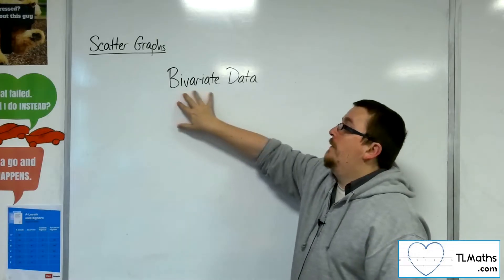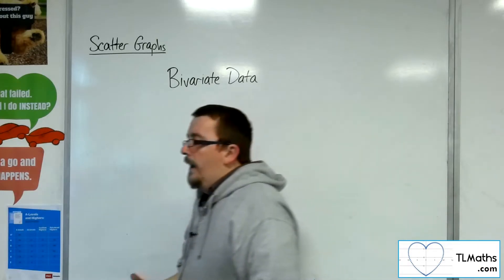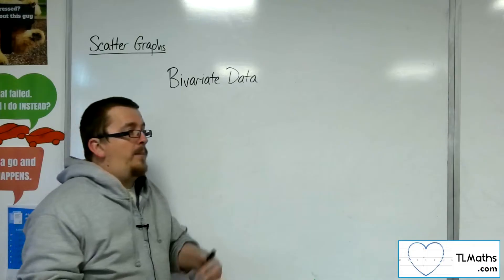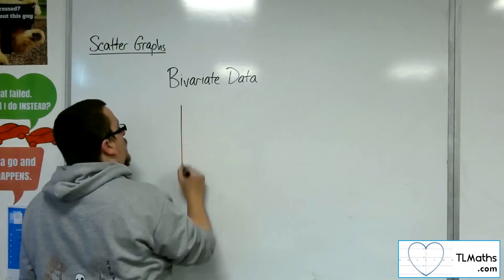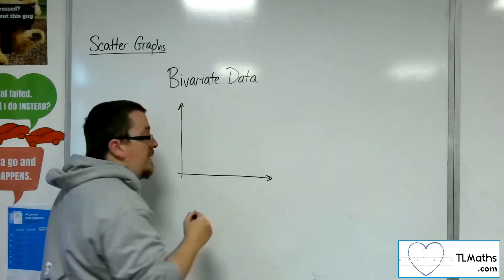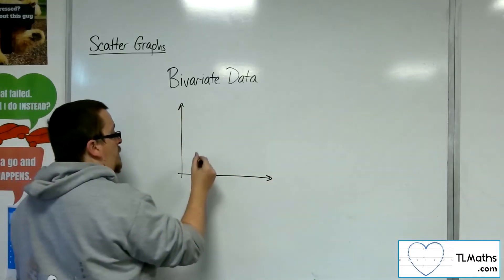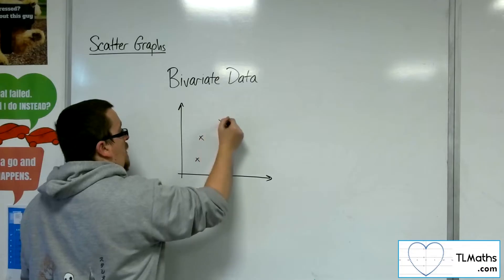So that's where this word is really coming from. And subsequently, because you have two variables, when you plot them, you'll have one on one axis and one on the other. And so you would be plotting a scattergraph.